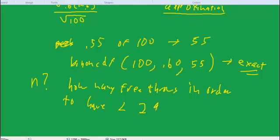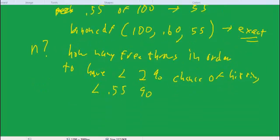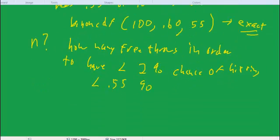Of hitting less than 0.55? So how many free throws do we have to shoot in order to have less than a 2% chance of hitting less than 0.55? Now there we could use the normal approximation pretty handily to solve that in just a couple of easy steps.